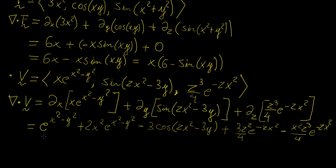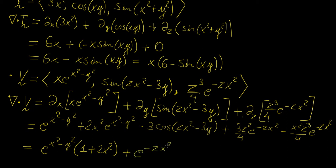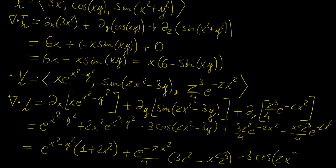Let's see if we can group some of the terms together. We have e^(x²−y²)·(1 + 2x²), then plus e^(−zx²)/4·(3z² − x²z³), and then the last term is minus 3·cos(z·(x² − 3y)). So this gives us our final scalar function for the divergence of v.